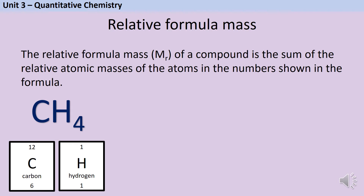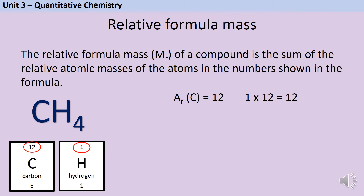One thing to watch out for is that sometimes in a formula there won't be a number next to a particular element. You should remember that if this happens, it's because there's only one of that element. Chemists are pretty lazy — we never write the number one, not when we're doing ion charges, not when we're balancing equations, and certainly not in a simple formula. So for methane, carbon has a relative atomic mass of 12 and there is one carbon atom, and hydrogen has a relative atomic mass of 1 and there are four hydrogen atoms. Adding those together, methane has a relative formula mass of 16.